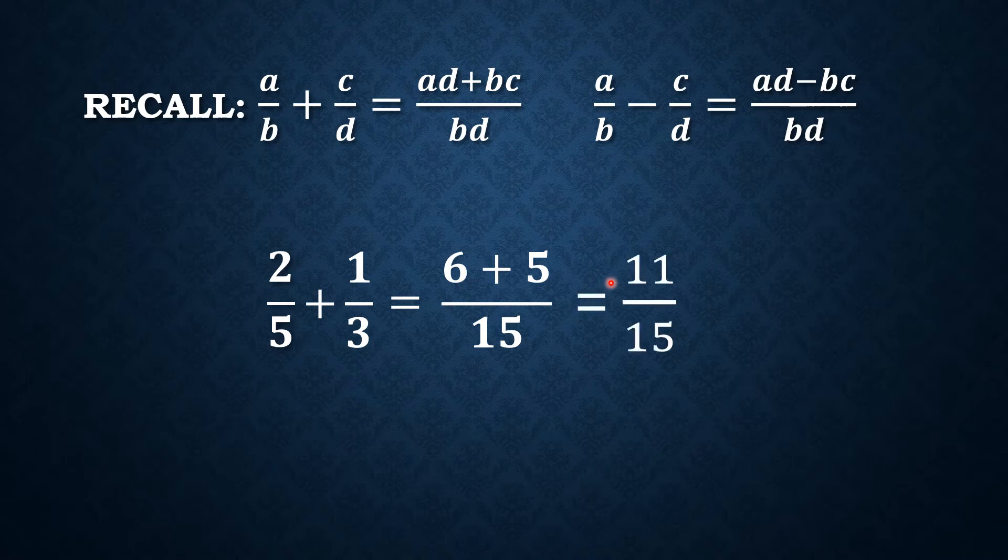So in this case, 6 plus 5 is 11 over 15. And this is now the answer when we add 2 over 5 and 1 over 3. This process is also applicable when we add or subtract two rational expressions with different denominators. So let's go.